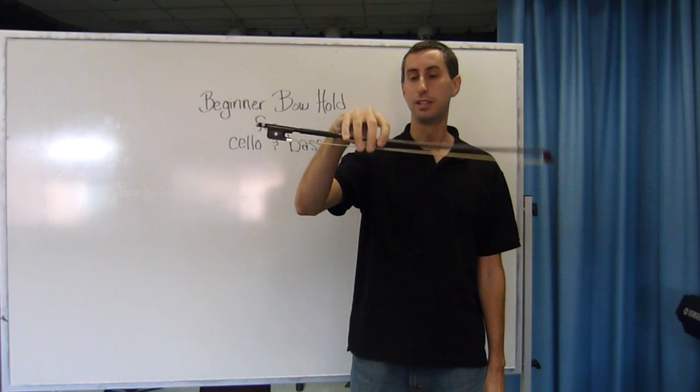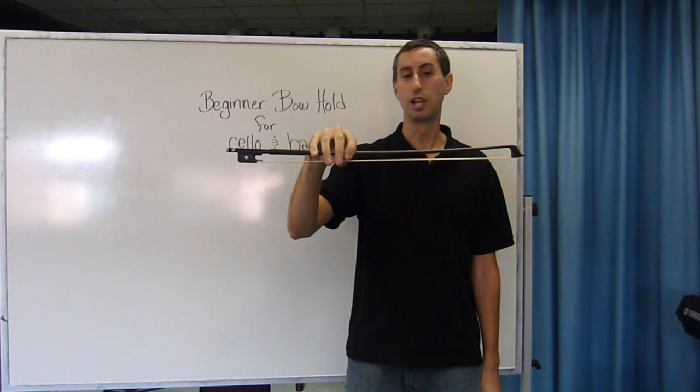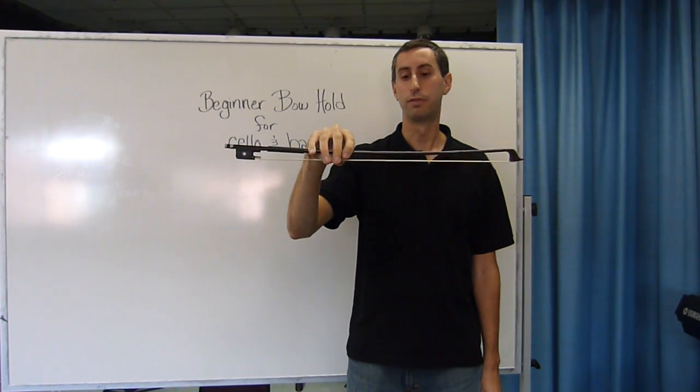Check to make sure the thumb is bent and that the fingers are loose and relaxed. And you have completed your beginner bow hold for cello or French bow hold for the double bass.